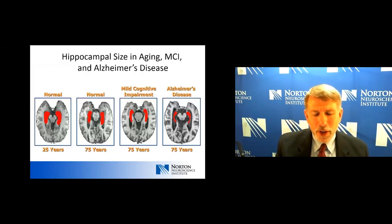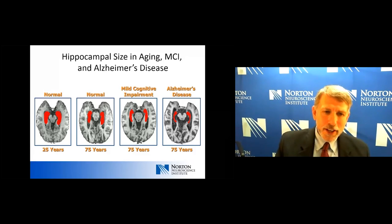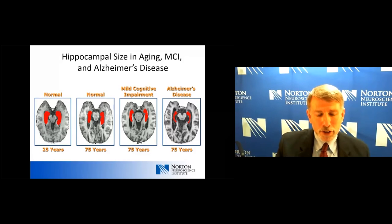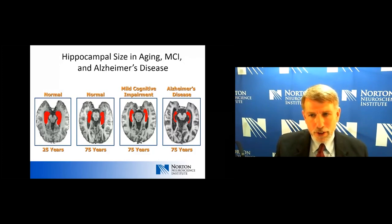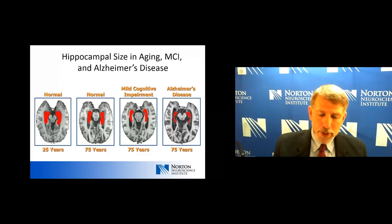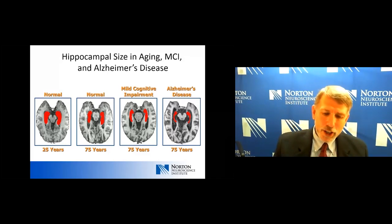This next slide illustrates hippocampal changes across the disease spectrum. These are axial views with the hippocampus colored in red. From left to right: at age 25, we have nice large hippocampi; at age 75, they're smaller but still normal and functioning well; as we progress to MCI, they may get smaller; and in Alzheimer's disease, smaller yet. Seeing an MRI with very small hippocampi wouldn't prove Alzheimer's disease, but would certainly alert you to that possibility. In the near future, MRIs will be able to measure cortical thickness and atrophy patterns in a much more sophisticated way, which should help with diagnostic accuracy.